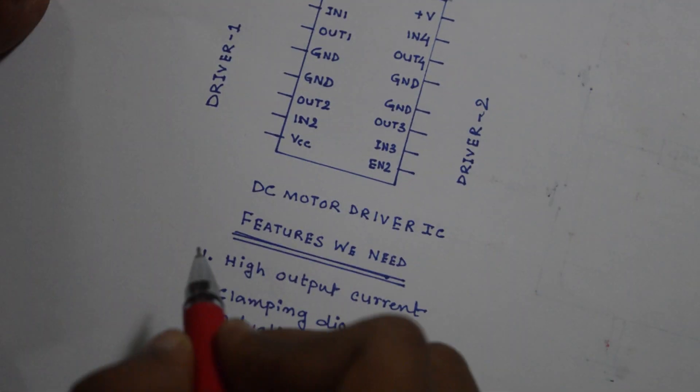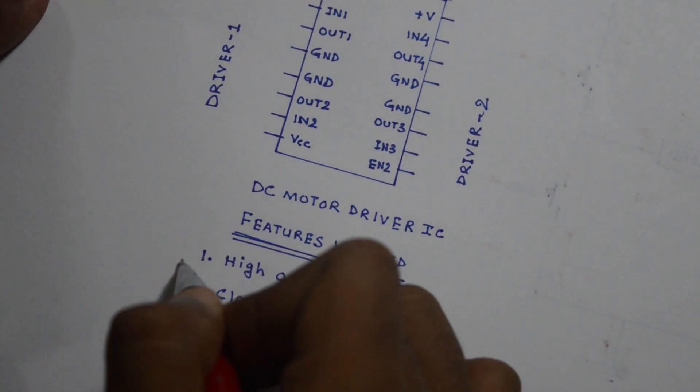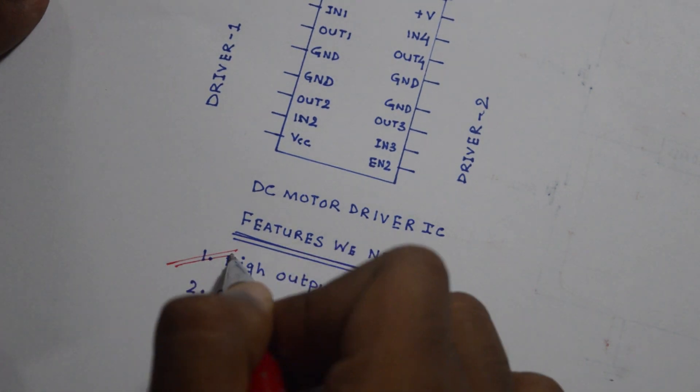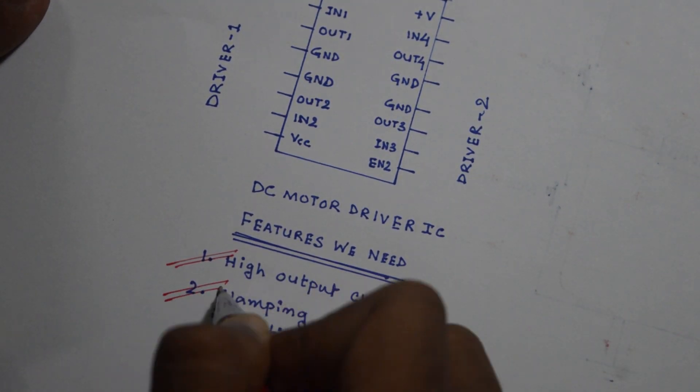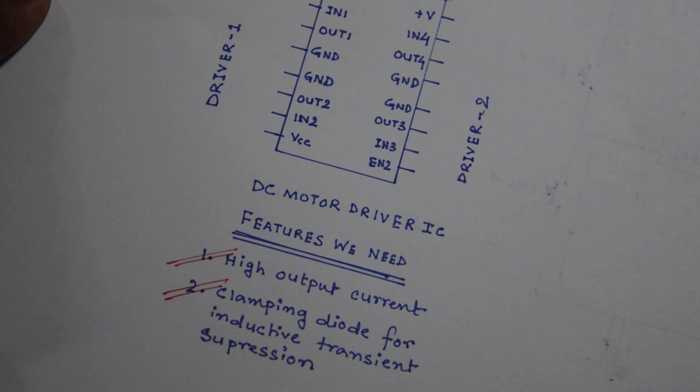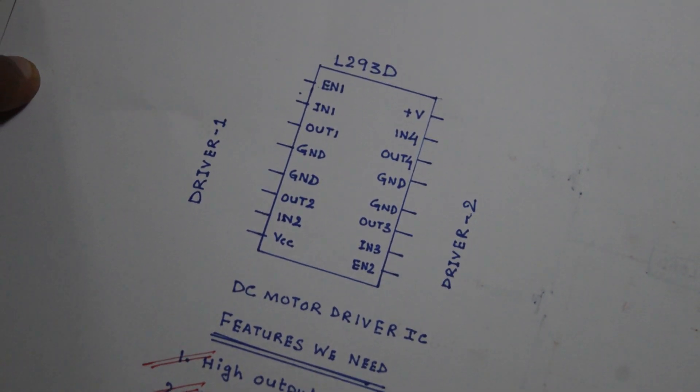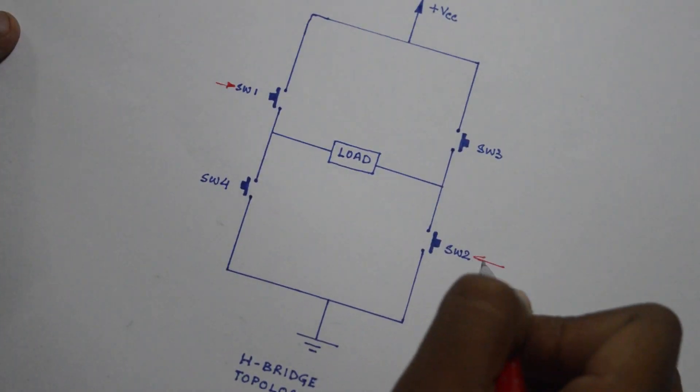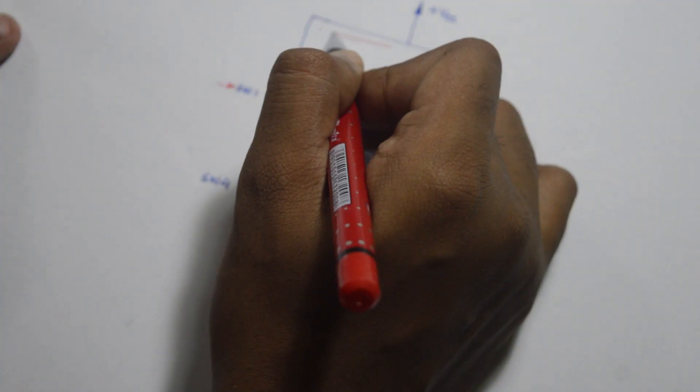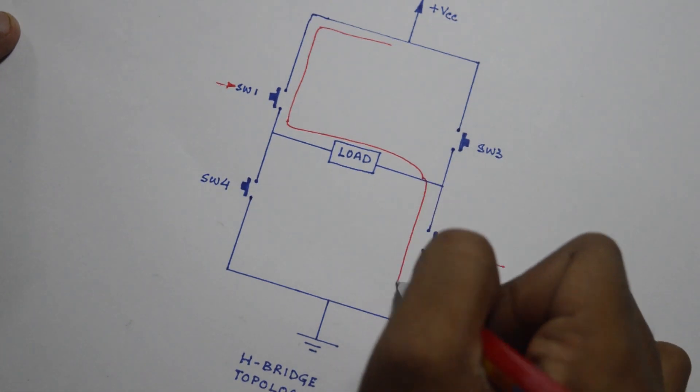The important features we need from a motor driver are high output current and protection from the inductive current when the load is off. The L293D is the driver IC we need here, which uses an H-bridge configuration. The name H-bridge comes from a configuration like this—the load is connected to form an H and four switches are connected in this manner.